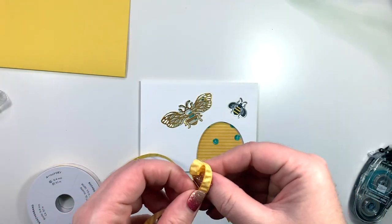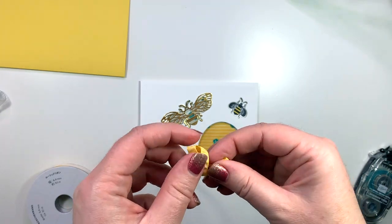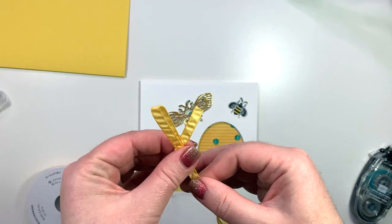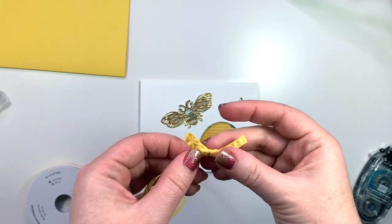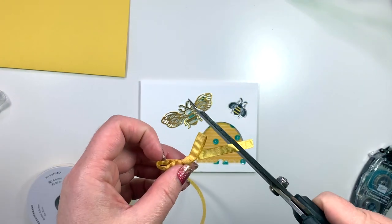I'm using some of this beautiful Daffodil Delight ribbon to tie a bow and then I'm just going to collect a few accent pieces for the front of the card.